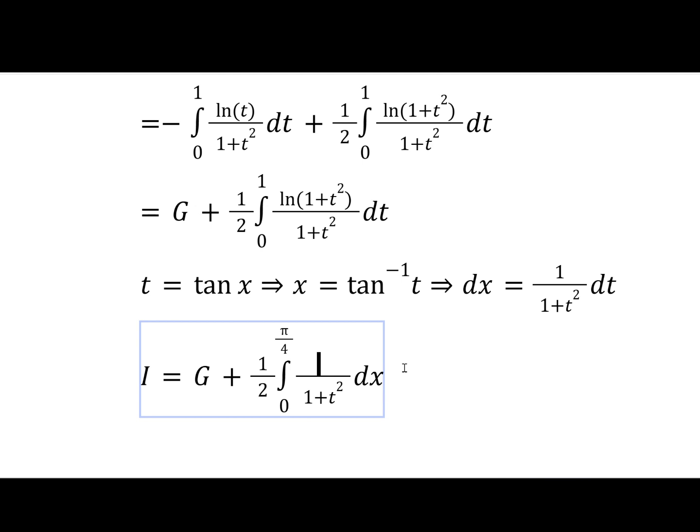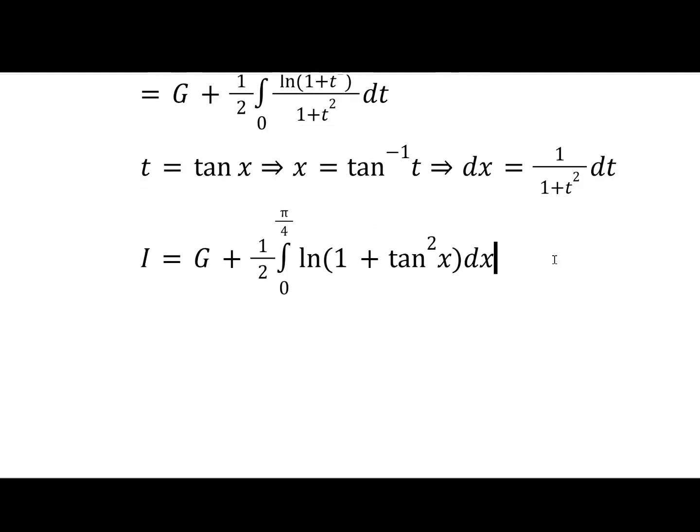So we just have this logarithm here. And 1 plus tan squared is obviously sec squared. And that is cos x to the minus 2. And now we can take this minus 2 power outside the logarithm, giving us this.